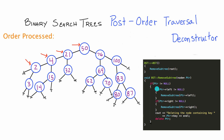The pointer pointing to node 2 skips the left if condition because node 2 doesn't have a left child. It moves to the next condition and finds that node 2 has a right child, so it enters that if condition and calls remove subtree passing in a pointer to node 3. Node 3 does not have a left child and does not have a right child, so it falls down to the delete step, prints 'deleting node containing key 3,' and deletes the node. So the first node that gets processed is node 3.